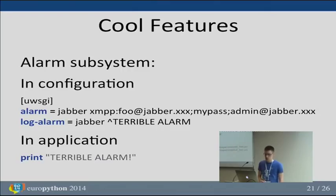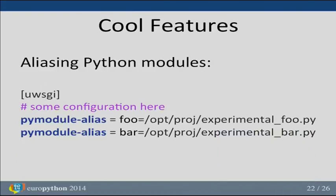There is also a nice feature for aliasing Python modules. Having multiple versions of a Python package is very common — one way is manipulating the Python path or using virtualenvs. But UWSGI gives another option: the aliasing system. For example, if you have imports of 'foo' and 'bar' modules throughout your code and want to test modifications while keeping the originals intact, you can create 'experimental_foo' and 'experimental_bar' modules and alias them, so that imports of 'foo' and 'bar' will load the experimental versions instead.